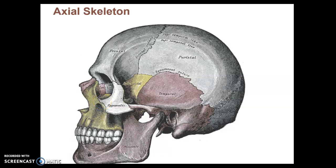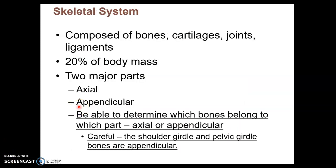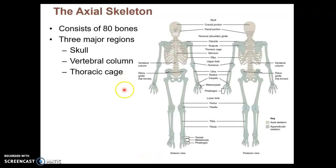We are beginning the skeleton, and this is the first of two videos on the skull portion of the axial skeleton. As we go through these videos, keep in mind the distinction between the axial skeleton and the appendicular skeleton — be especially careful with the shoulder girdle and pelvic girdle, as they are appendicular skeleton bones. There are 206 bones in the skeleton; however, 80 of them are part of the axial skeleton, which includes the skull, the vertebral column, and the thoracic cage.